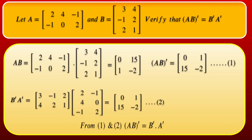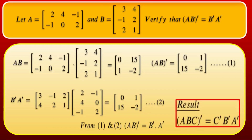From the two results, (AB)^T and B^T·A^T are the same. That means (AB)^T = B^T·A^T is verified. This is the reversal law of transpose, which is also true for 3 matrices and generalizes to N matrices: (A·B·C)^T = C^T·B^T·A^T.